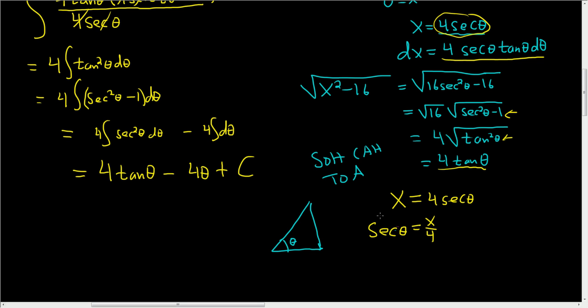Secant is 1 over cosine, so it's hypotenuse over adjacent. In this case, the hypotenuse is x and the adjacent is 4.